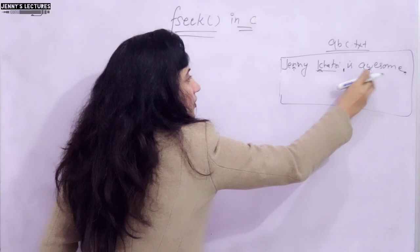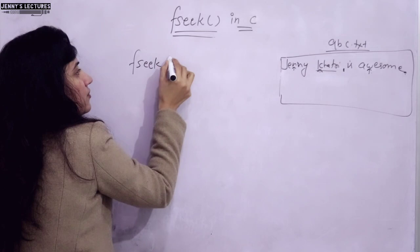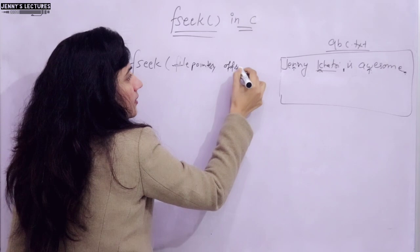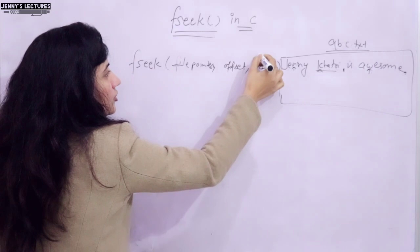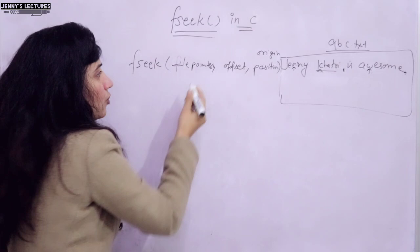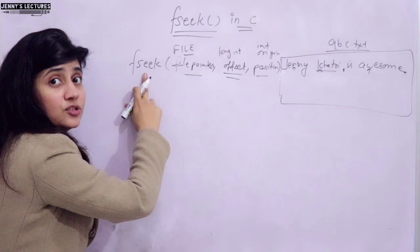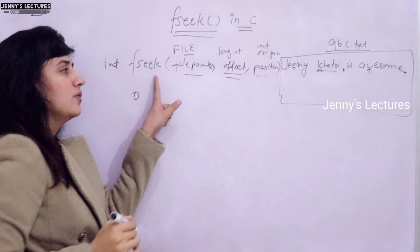What is the syntax of writing the fseek function? Just write fseek - it takes three arguments. The first is the file pointer, the second is the offset, and the third is the position or origin. The data type of file pointer is FILE, offset is long int, and position is int. The return type of this function is int - it returns 0 if successful, otherwise it returns a non-zero value.